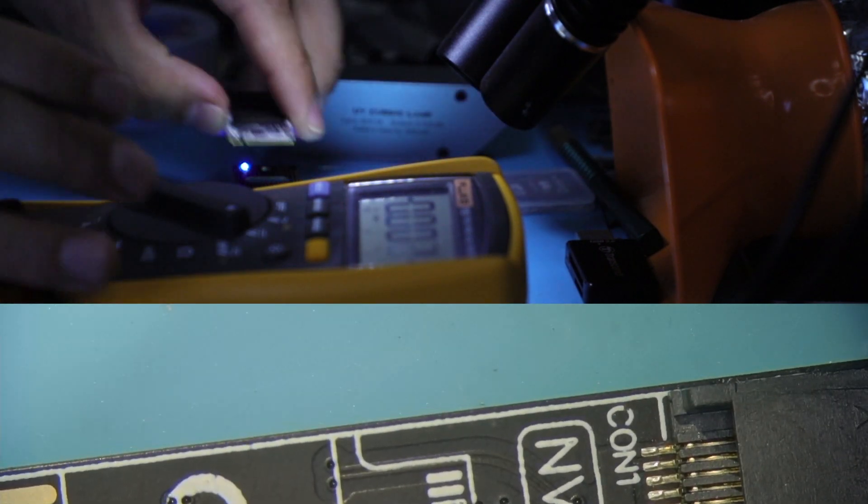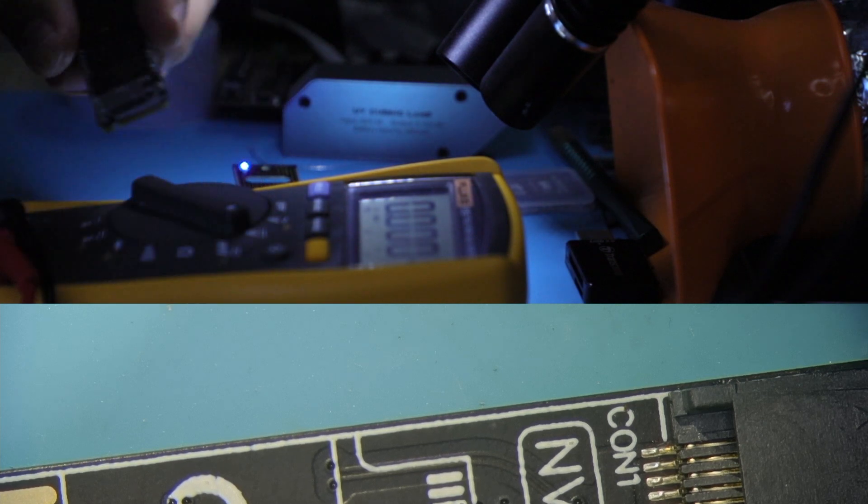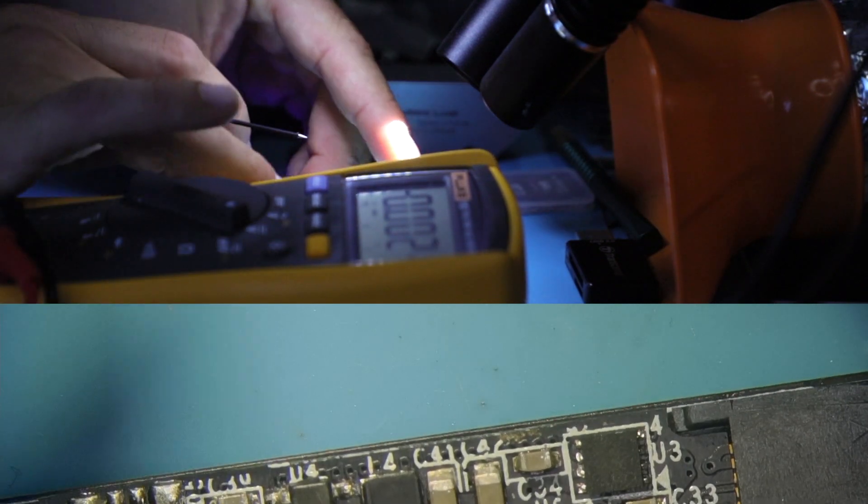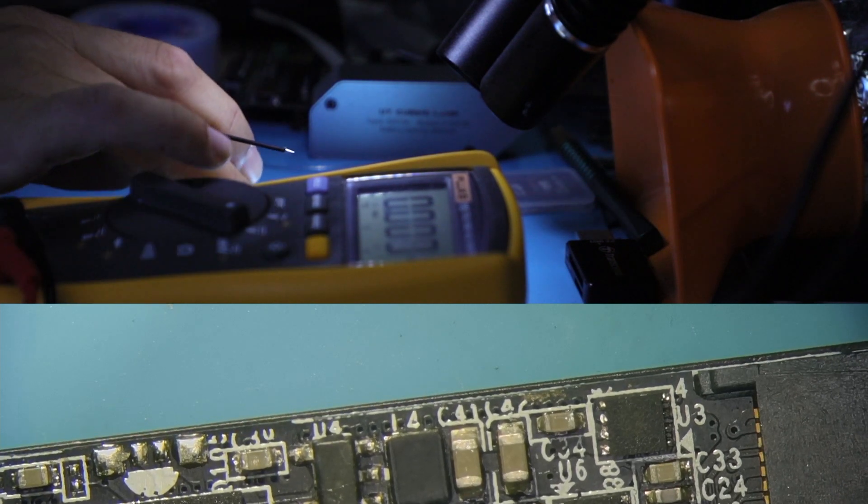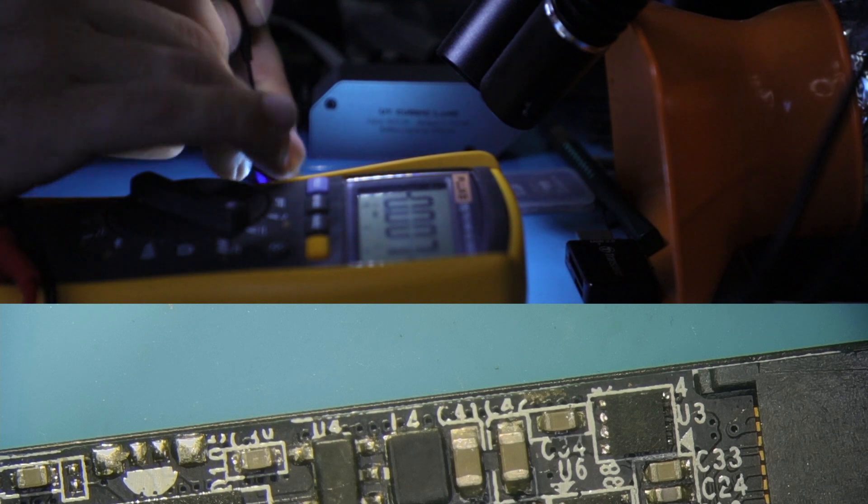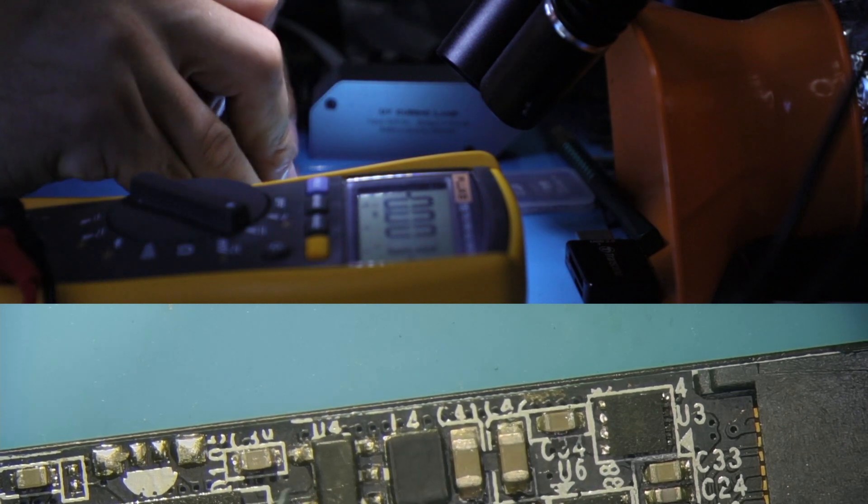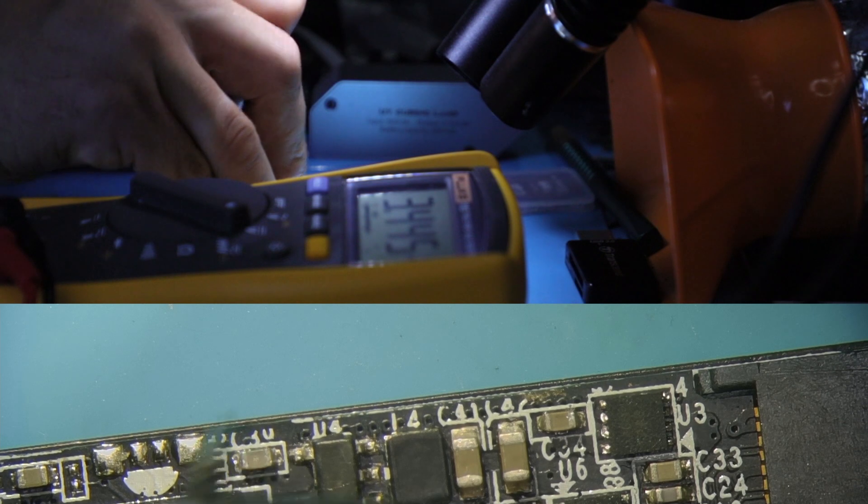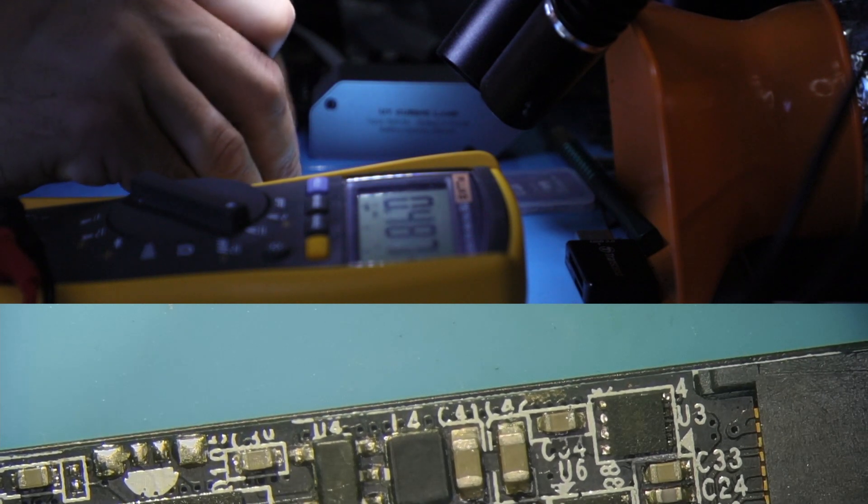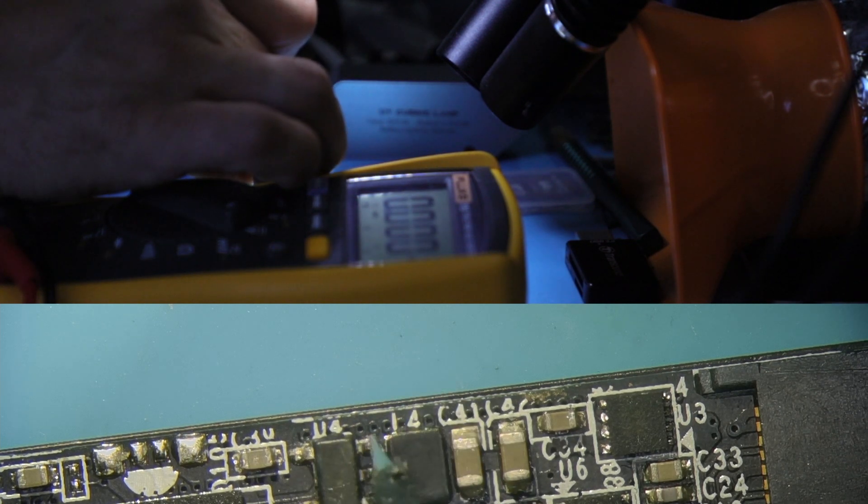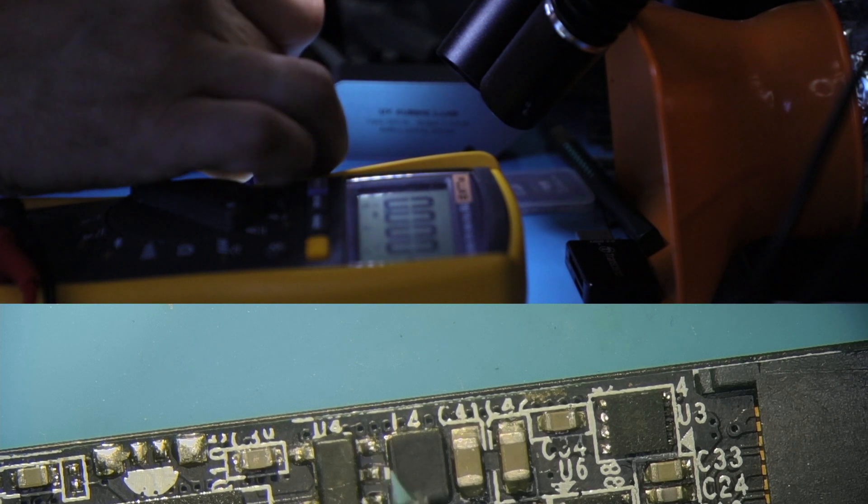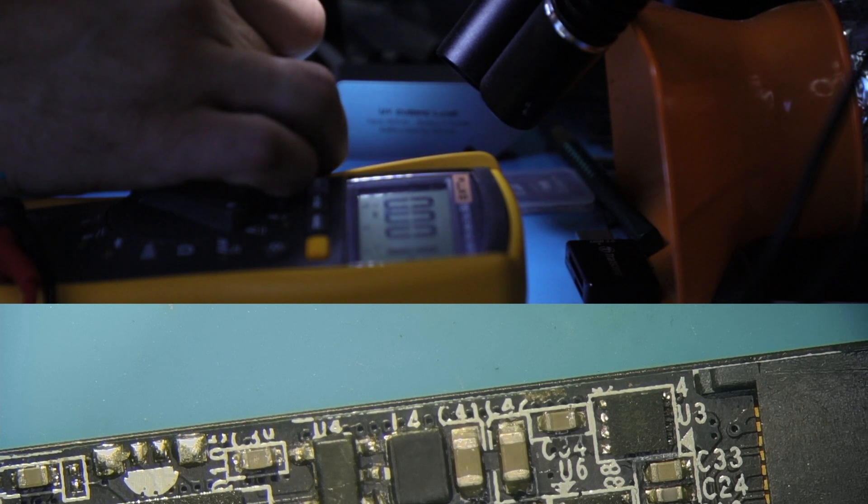That was the control unit. Now swap in the failed unit. Failed unit, probe on the ground. We should have 3.4 here. We do. Should have... that's a lot more. This is half a volt. That'd be the problem. Nothing here. Nothing here. Nothing here, and basically nothing here.